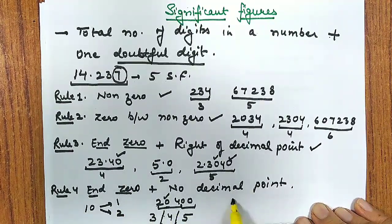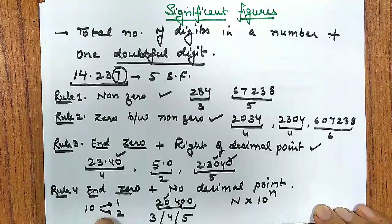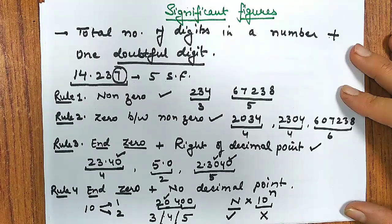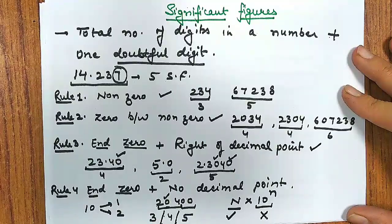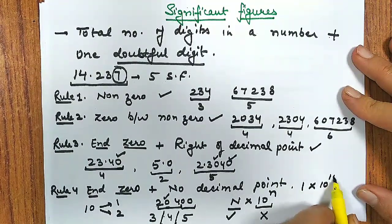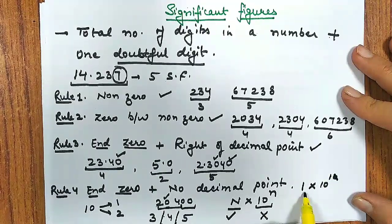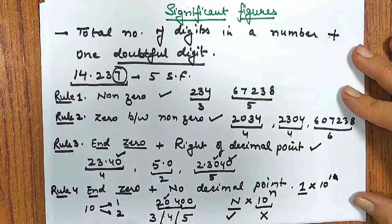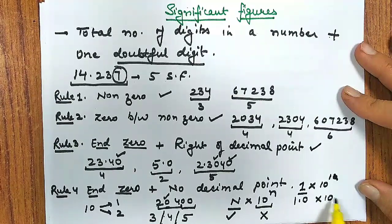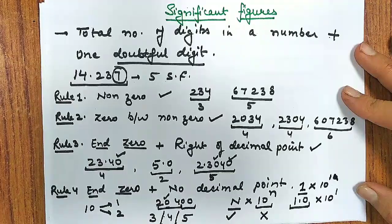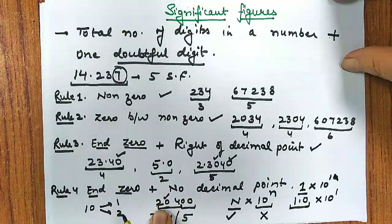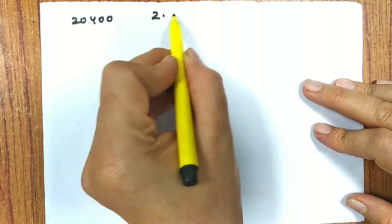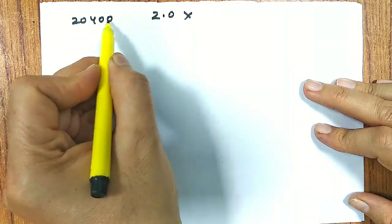Now the thing is zero - if a number ends in zero but they are not to the right of decimal, they end with zero but the second rule is not to be followed. That means no decimal point before it. For example, if I take 10, zero ends in this digit and it has no decimal point. So it may have one significant figure or it may have two significant figures.